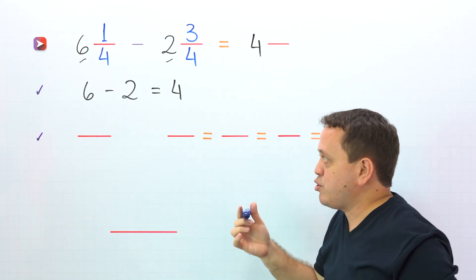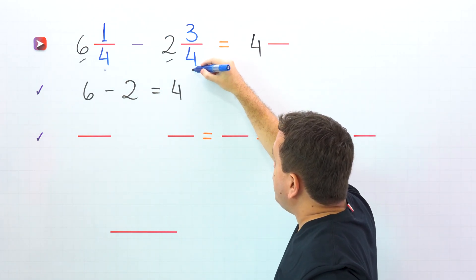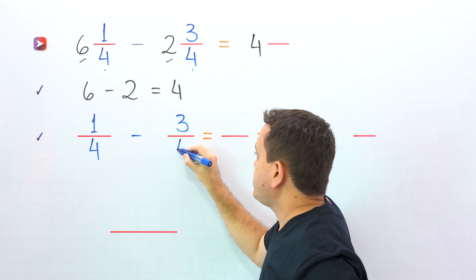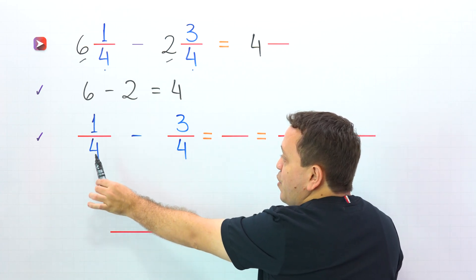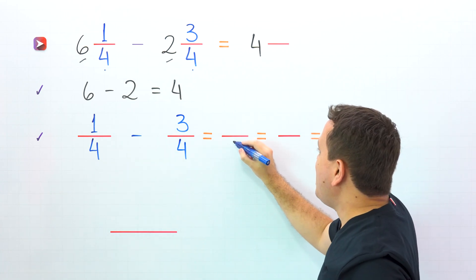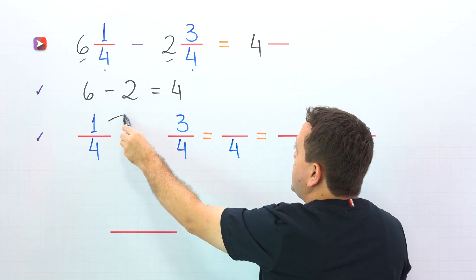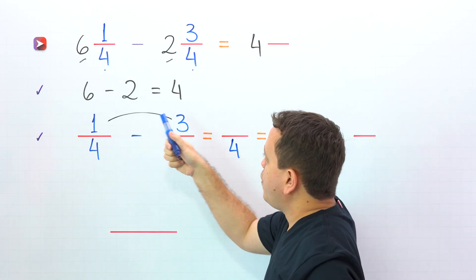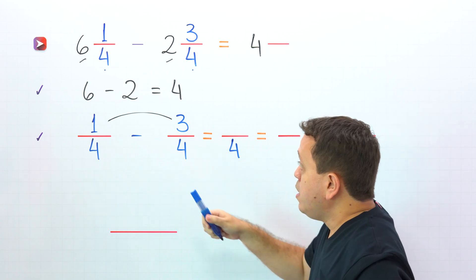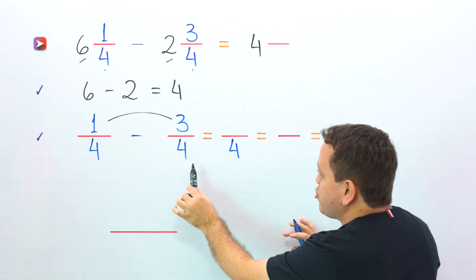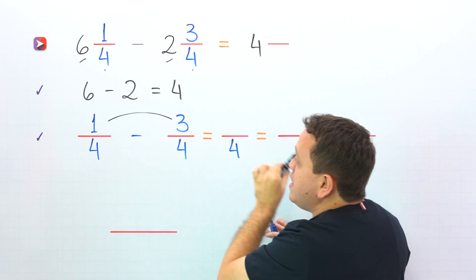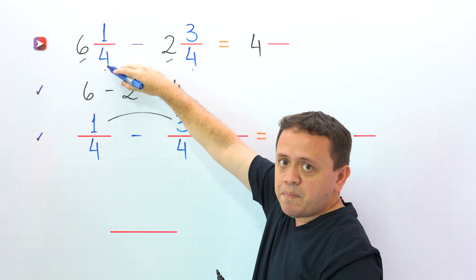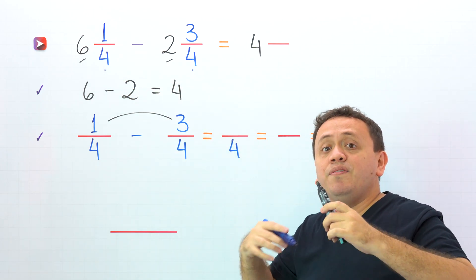It's time to subtract the fractions. The fractions are one-fourth and three-fourths. These two fractions have the same denominator, so we continue by subtracting the numerators: 1 minus 3. Hold on! We cannot subtract 3 from 1, because 3 is larger than 1. The problem is that the second fraction is greater than the first fraction — the fractional part of the second mixed number is greater than the fractional part of the first mixed number.